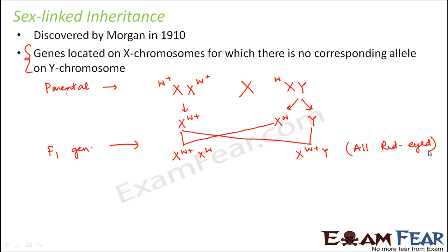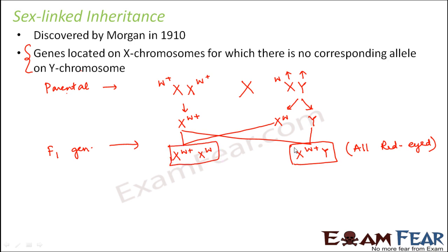The F1 generation was all red-eyed, and Morgan thought the dominant trait was being expressed, consistent with Mendel's rules of inheritance. Importantly, the father does not pass the white-eye trait to the son. The father had white eyes but did not pass that trait to the son, because the father can contribute either X or Y. If a boy is born, the Y is being donated by the father, and the Y does not carry the eye-colour gene — therefore the father could not pass the eye-colour gene to the son.